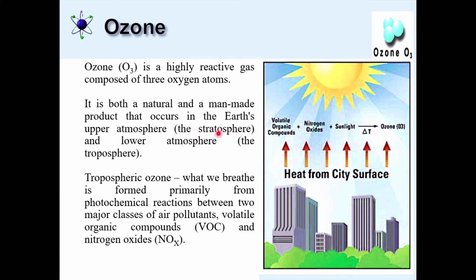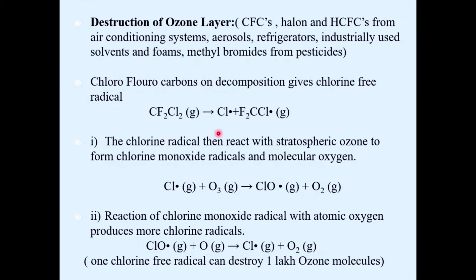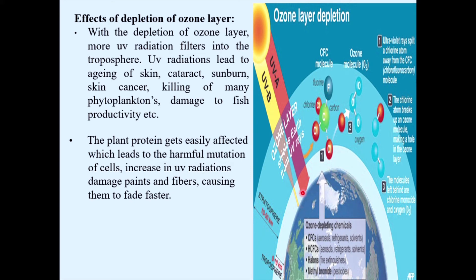The thickness of the ozone layer is measured in a unit called the Dobson unit or in millimeters. The normal thickness of the ozone layer is about 3 to 5 millimeters, or 300 to 500 Dobson units.